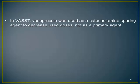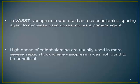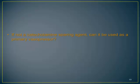In the VAS trial, vasopressin was used as a catecholamine-sparing agent — all patients were already on catecholamines, and vasopressin was added, not used as a primary agent. As we know, high catecholamine doses are typically used in more severe septic shock, and vasopressin was not found to be beneficial in those patients — it was only beneficial in patients with less severe septic shock. So again, this goes against the physiological rationale.